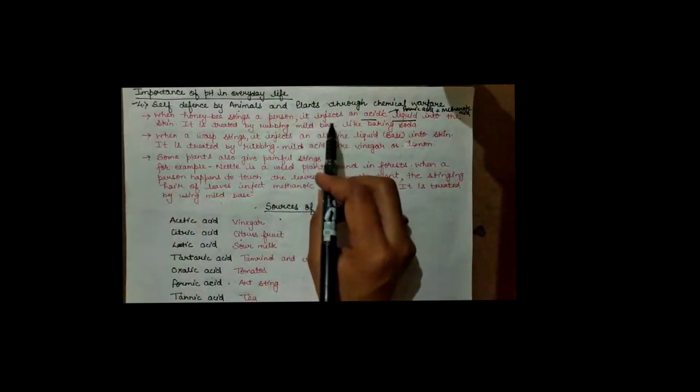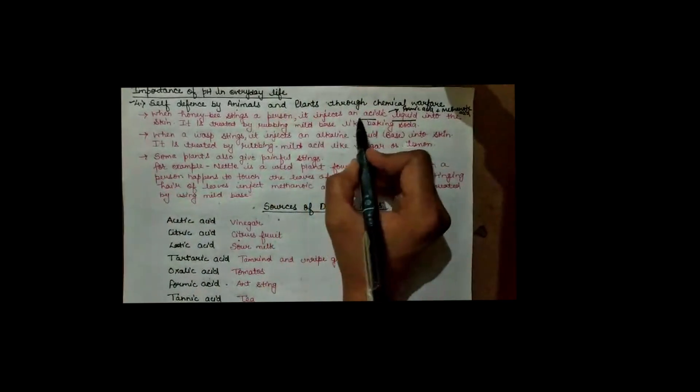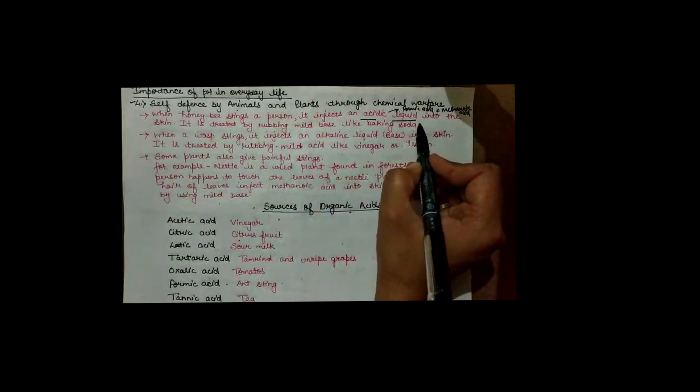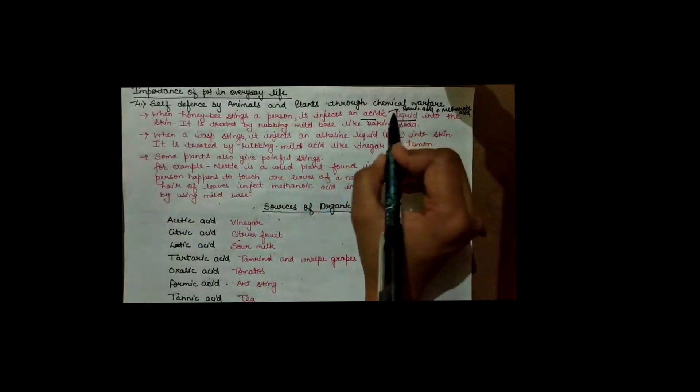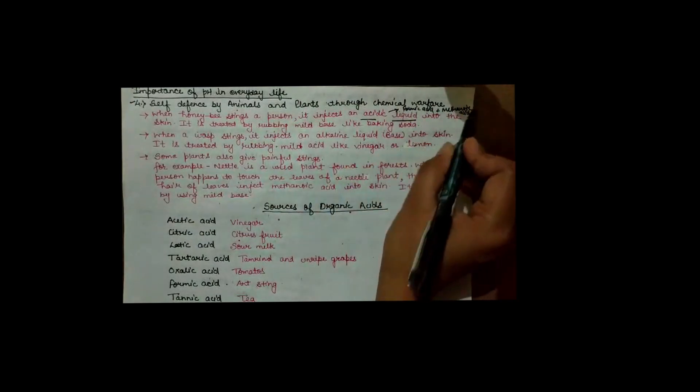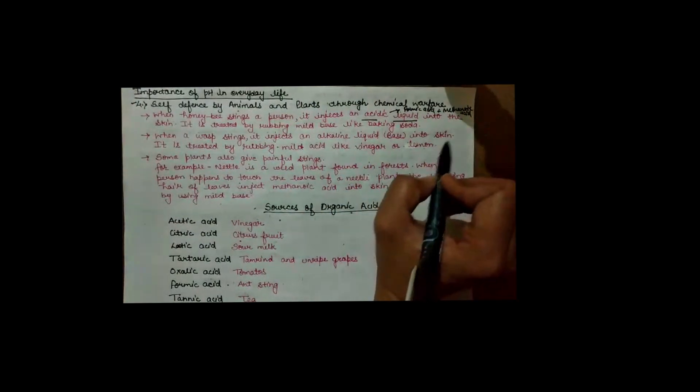When a honeybee stings a person, it injects an acidic liquid — formic acid, also called methanoic acid — into the skin, which causes pain and irritation.